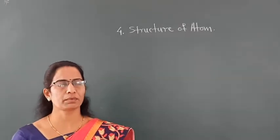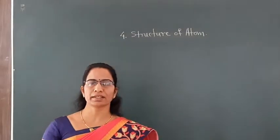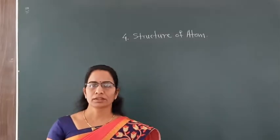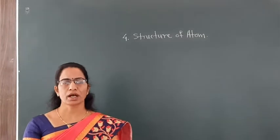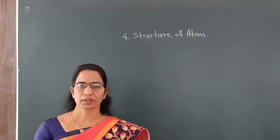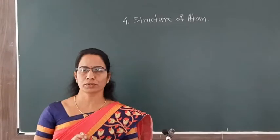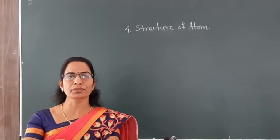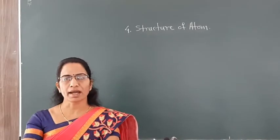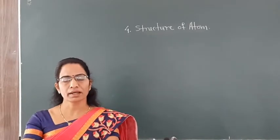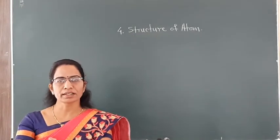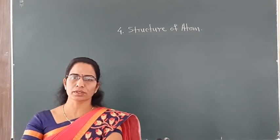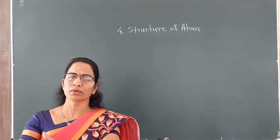Hello students. We were discussing about the 4th chapter, that is structure of atom. In the previous lecture we discussed isotopes, isobars, and isotones. In the case of isotopes, we studied that these are different atoms of the same element having the same atomic number but different mass numbers. Isotopes possess the same number of protons but different number of neutrons.